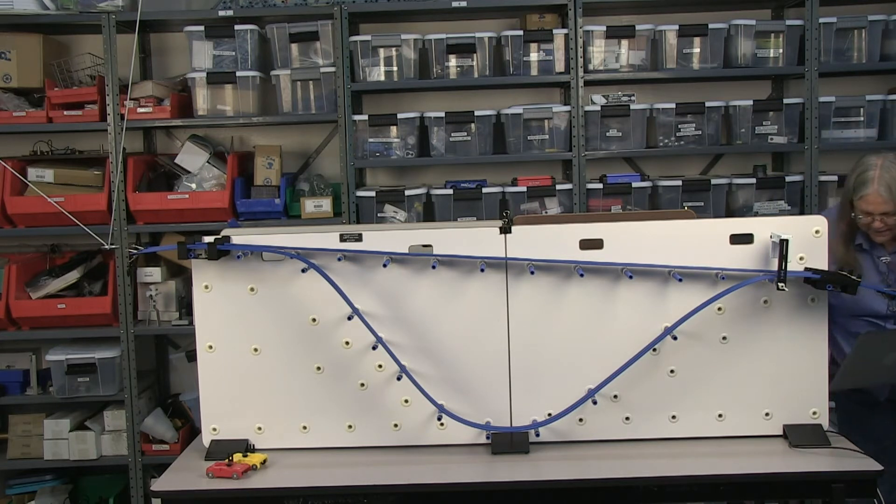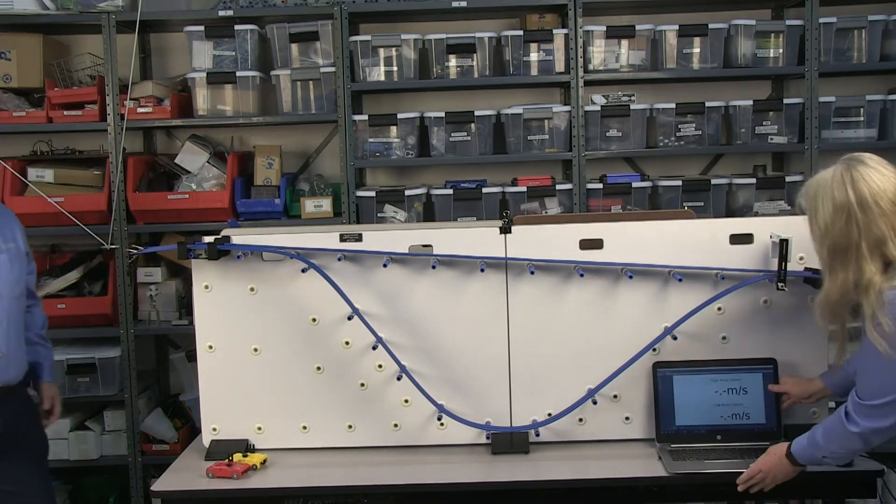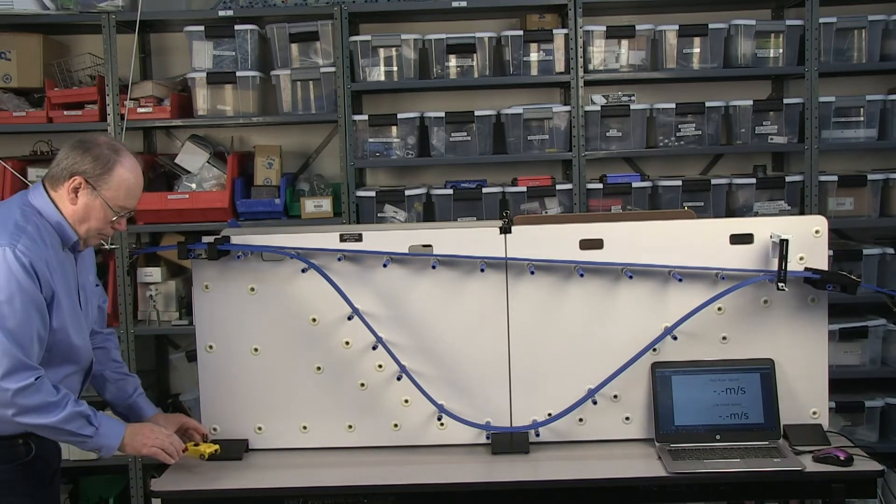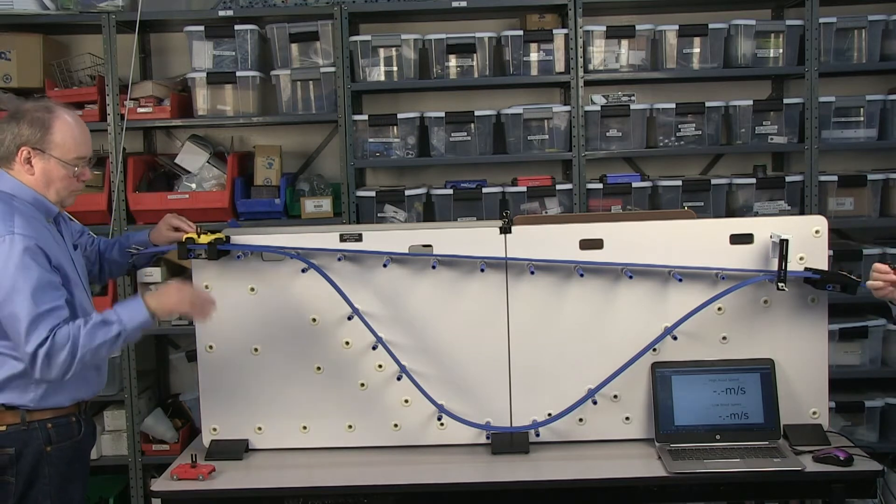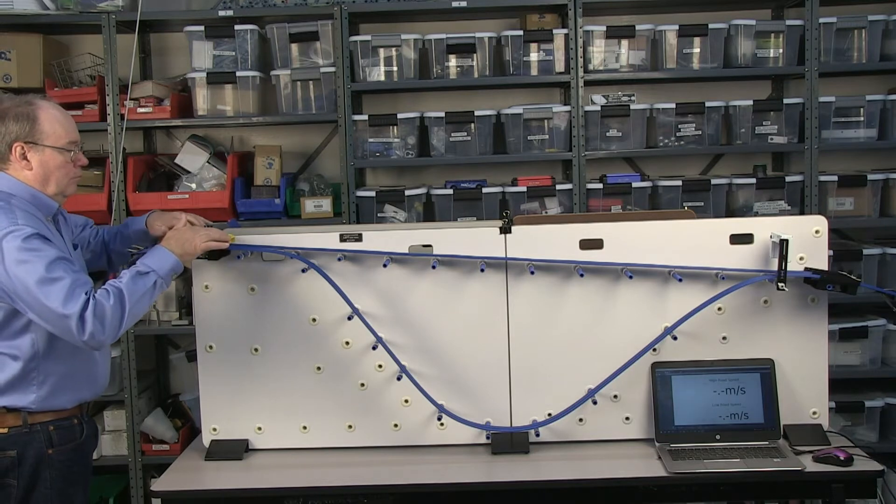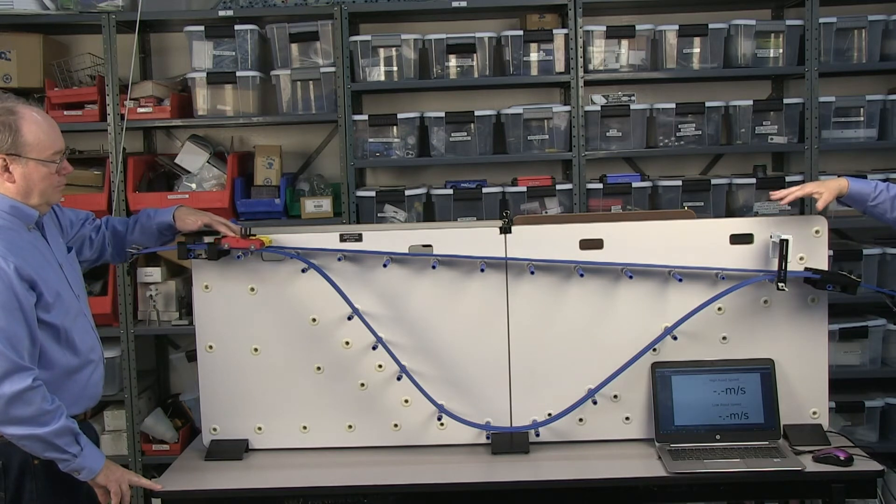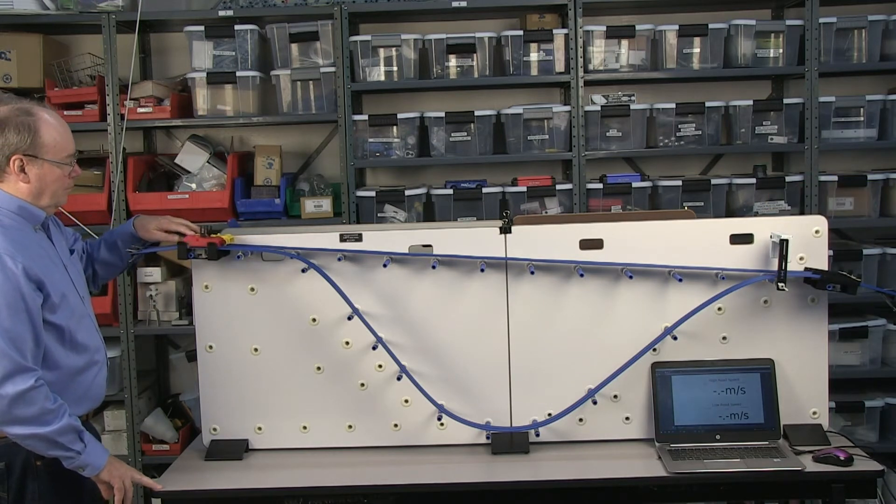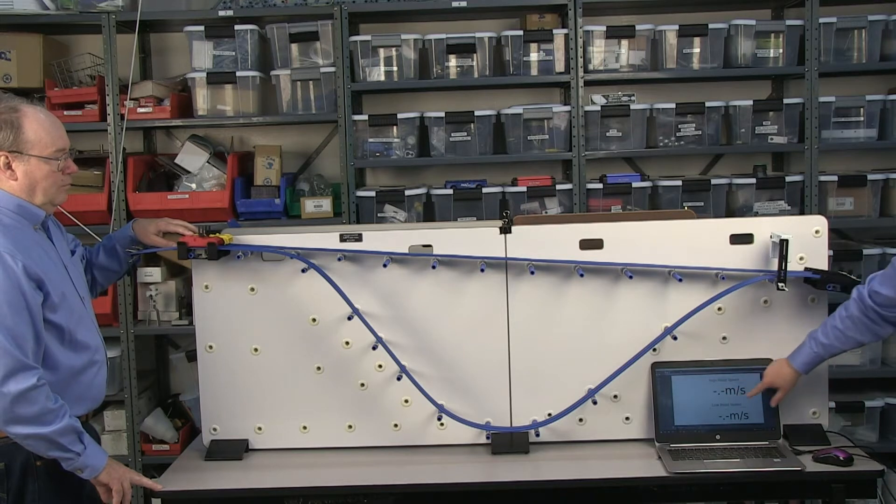And I have my laptop here which is connected to my wireless smart gate. So the wireless smart gate is kind of convenient here because you don't have to have any wires coming off of it. I've connected here and I have the high road speed showing at the top and the low road speed showing at the bottom.